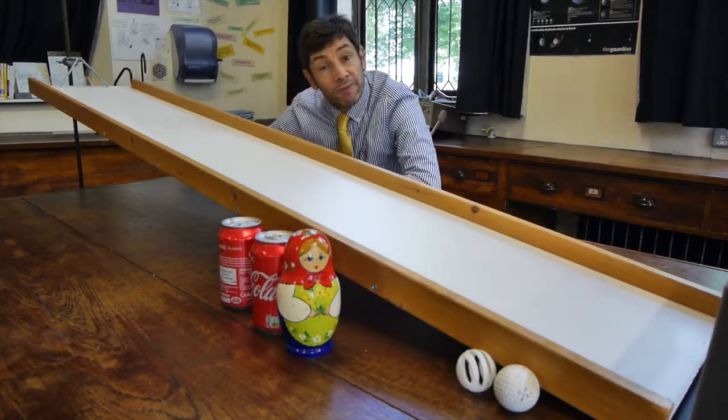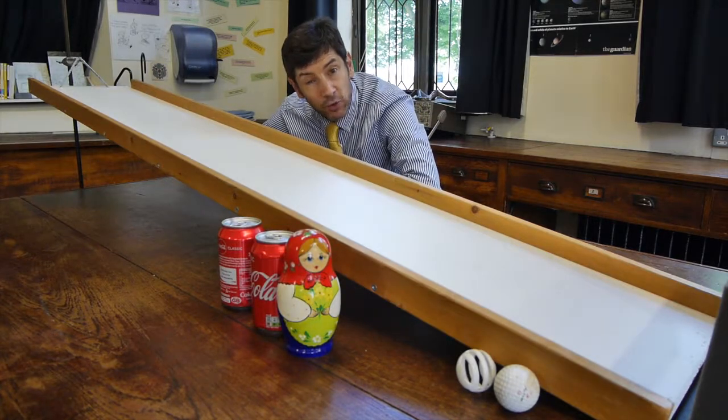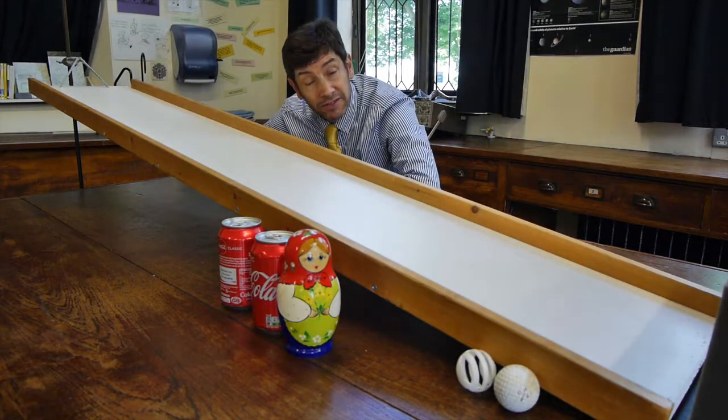So that's rather strange, because when we drop them vertically, both cans fall at the same rate and from the same height, both of them hit the ground at the same time.